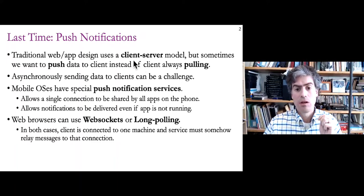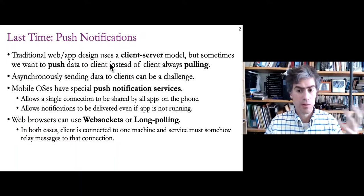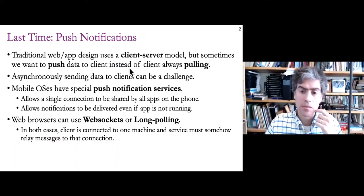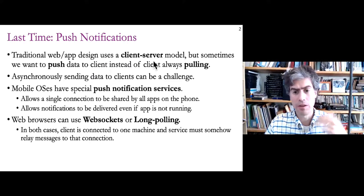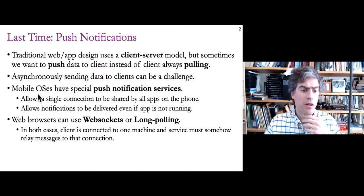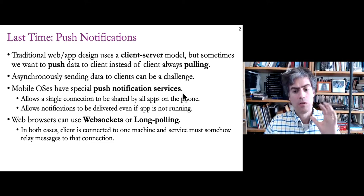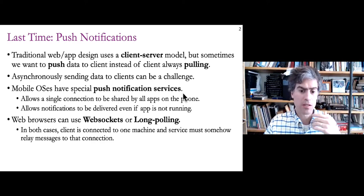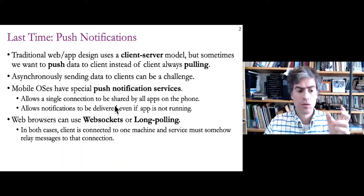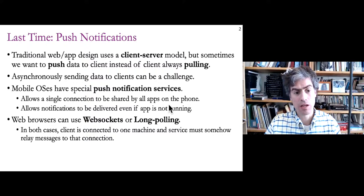This is a challenge because of the way the internet is built — specifically with NATs and networking — and the fact that client devices are not on all the time. Mobile OSes have a specific solution called push notification services, managed by the operating system provider. These allow the client to have a single connection to the cloud, shared by all apps on the phone that might be getting notifications.